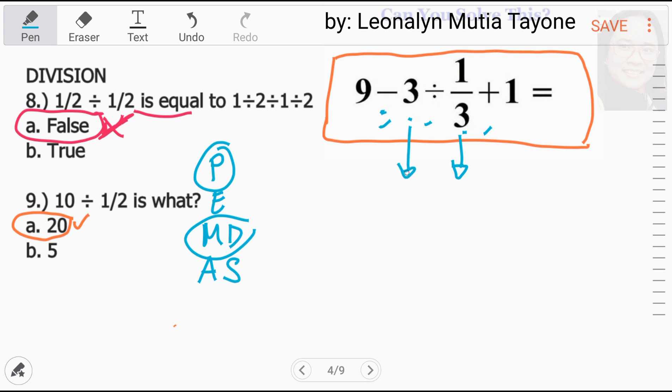Kopyahin si 3. Tapos, si division maging multiplication at reciprocal ni divisor sa 1 third. Thatin maging 3 over 1. So, itong 3 divided by 1 third, that means 9 siya. So, may 9 na 1 third sa 3. 3 divided by 1 third equals 9. May 9, inulot ko lang. May 9 na 1 third sa 3.